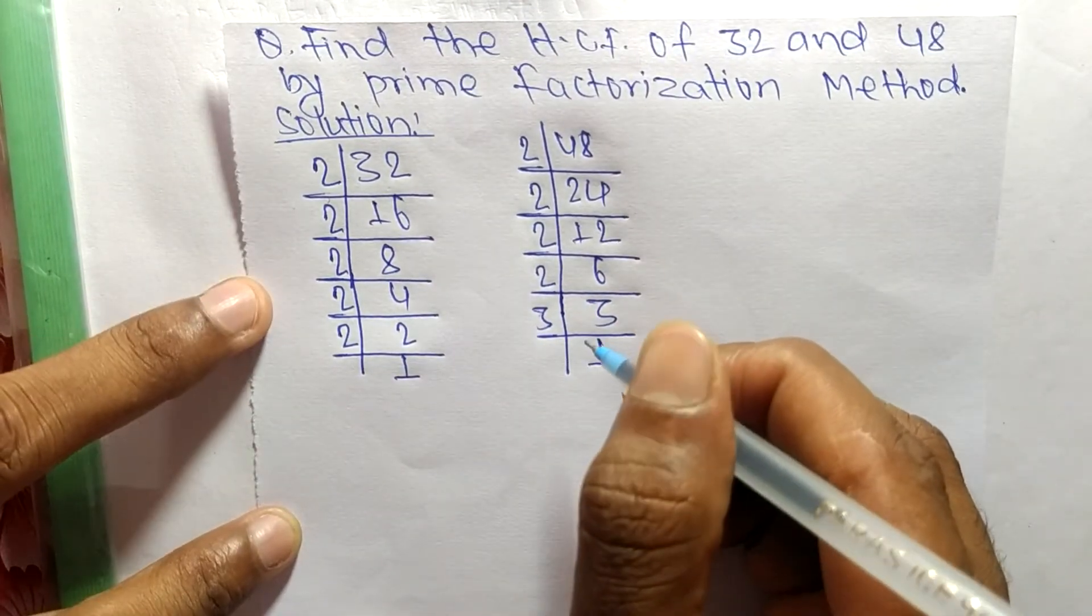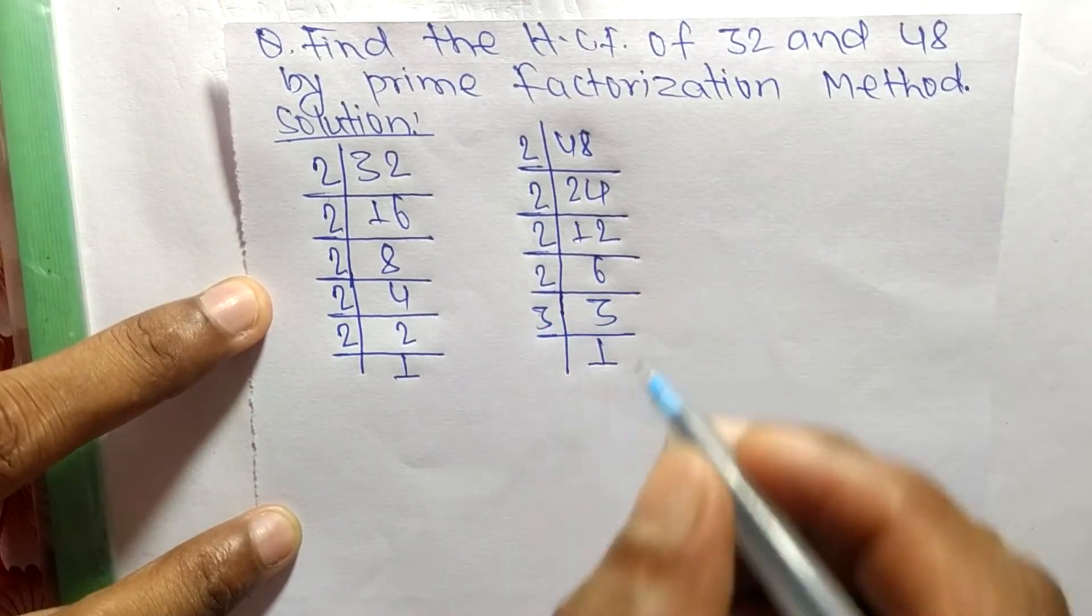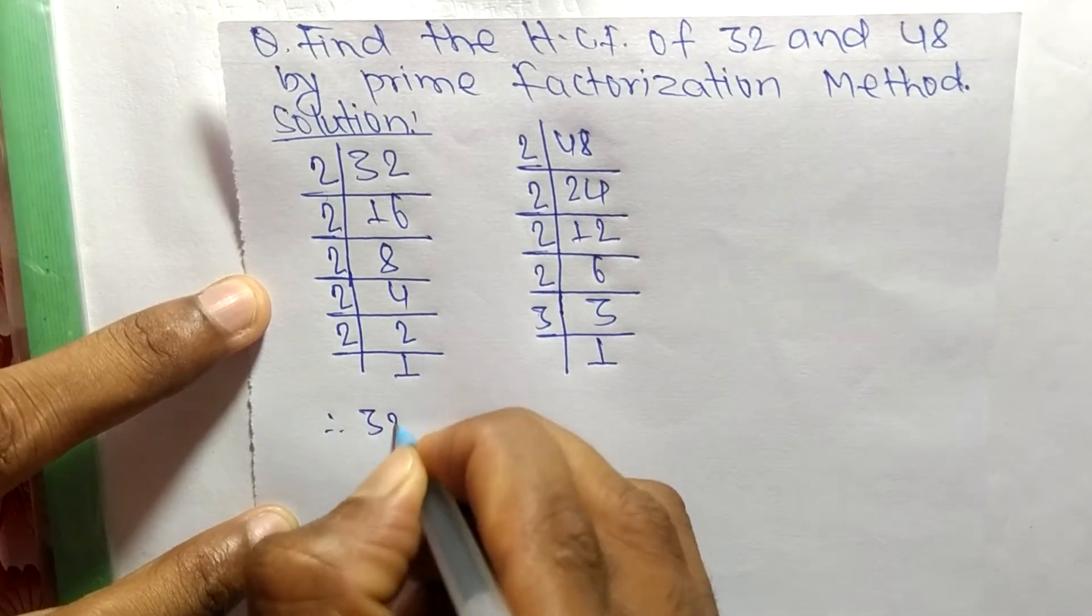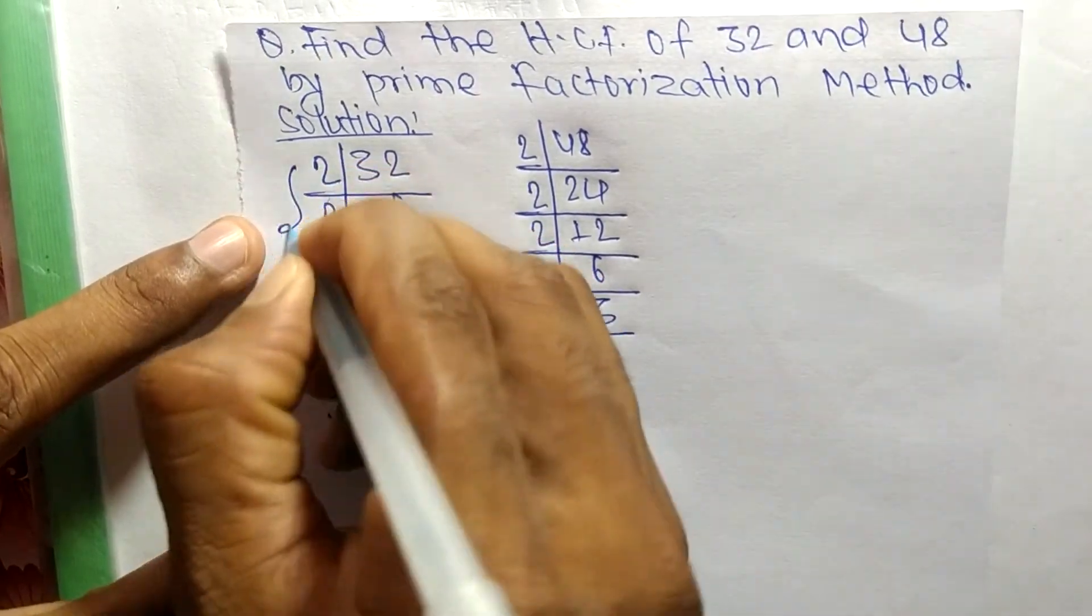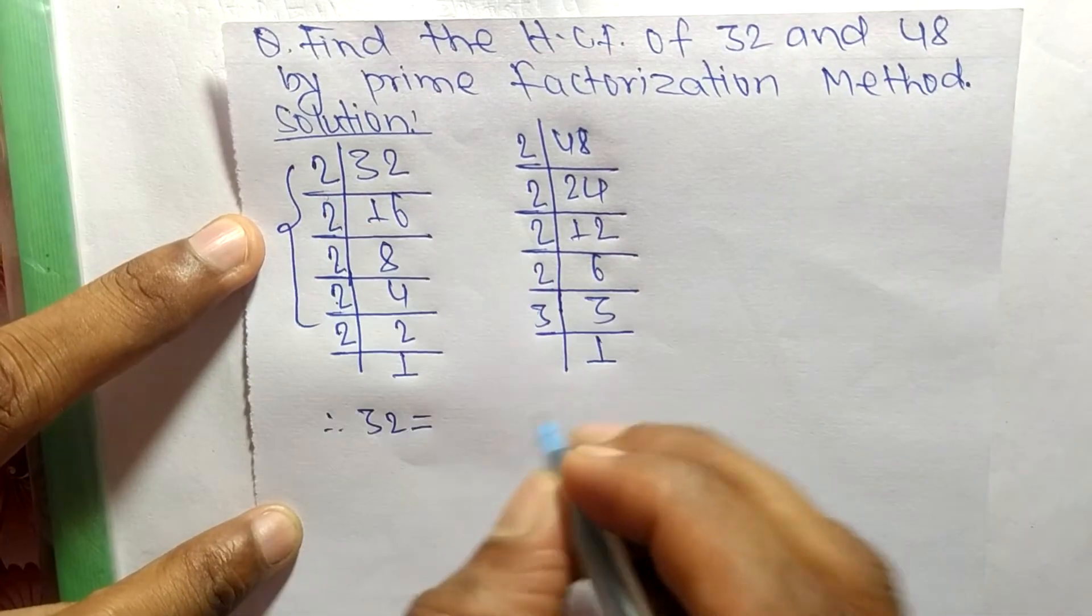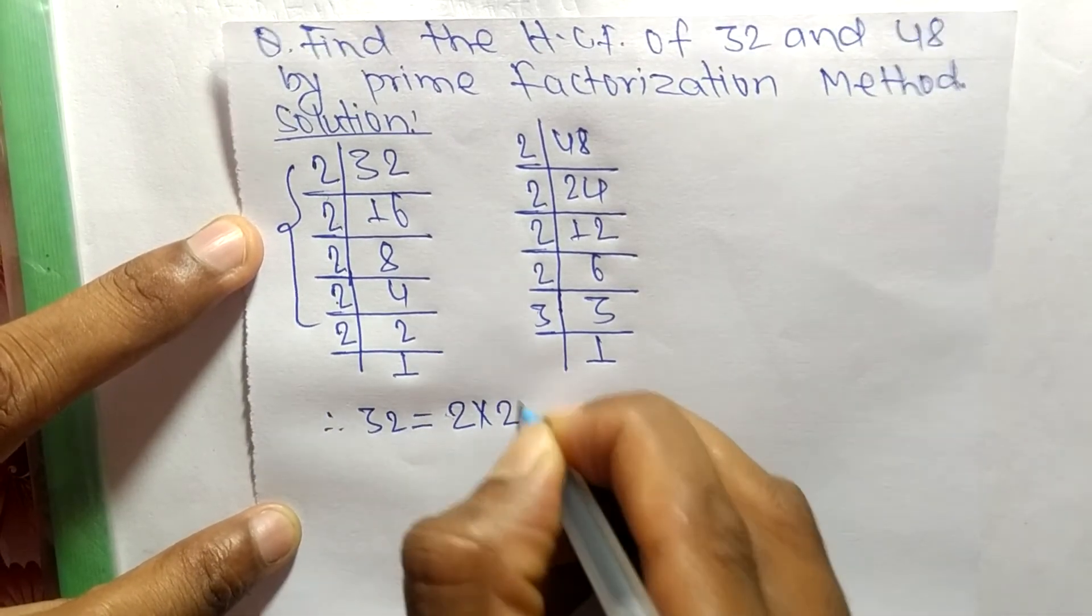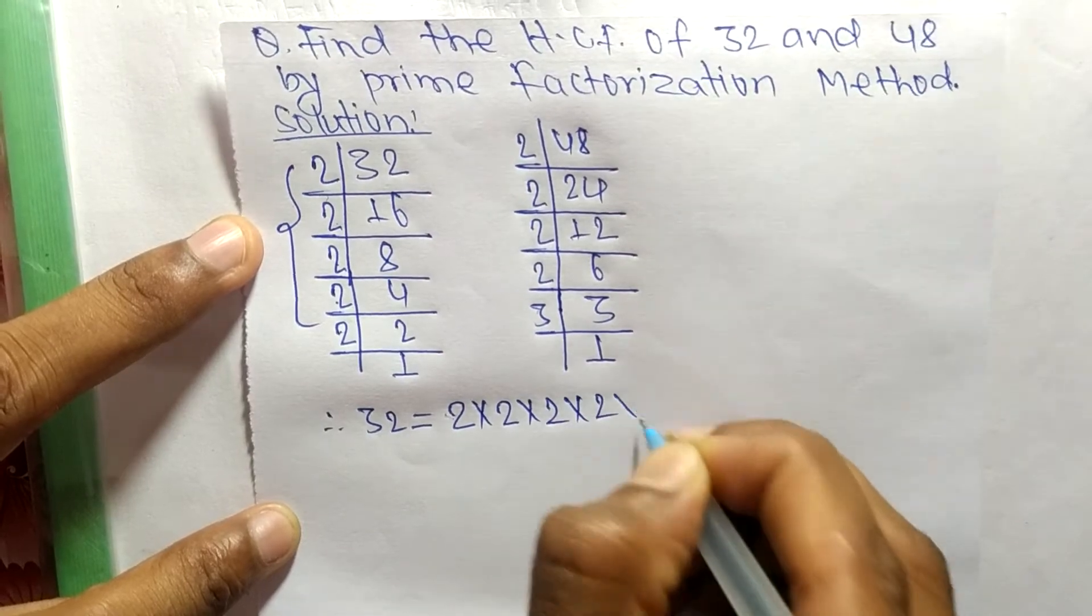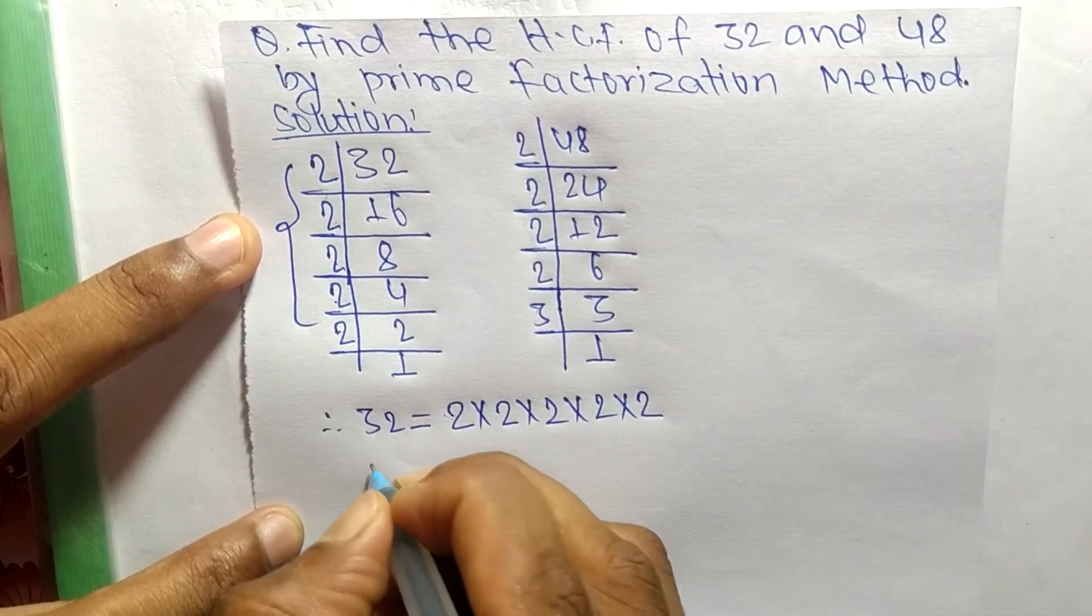Now from this prime factorization, we can write 32 is equal to 2 times 2 times 2 times 2 times 2, which is 5 times 2.